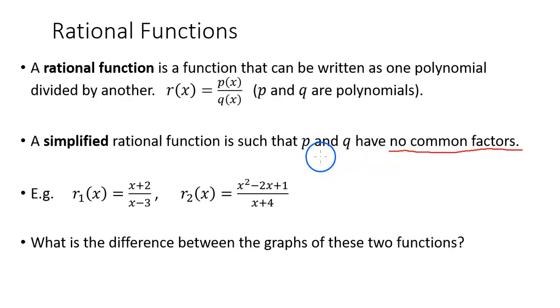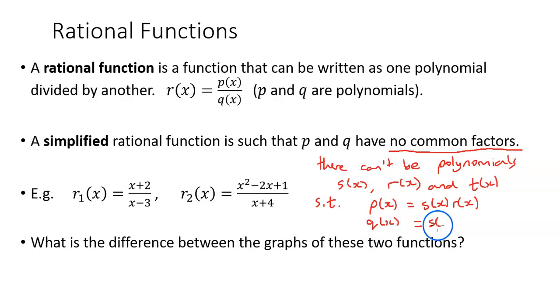So there can't be polynomials s(x), r(x), and t(x) such that p(x) equals s(x) times r(x) and q(x) equals s(x) times t(x).